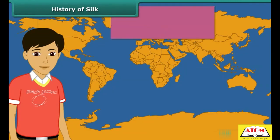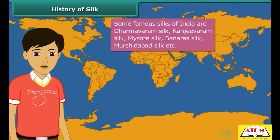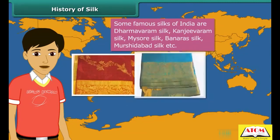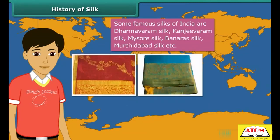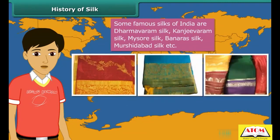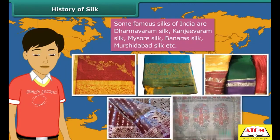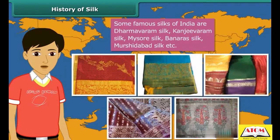Some famous silks of India are Dharmavaram silk, Kanjivaram silk, Mysore silk, Banarasi silk, Murshidabad silk, and others.